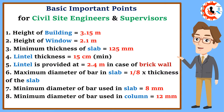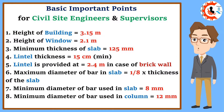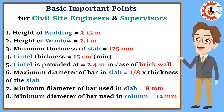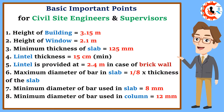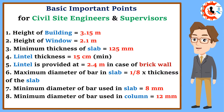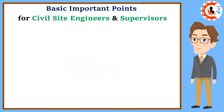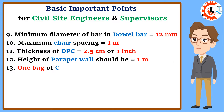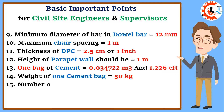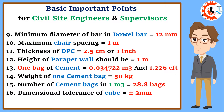6. Maximum diameter of bar in slab equals 1/8 times the thickness of the slab. 7. Minimum diameter of bar used in slab equals 8 millimeters. 8. Minimum diameter of bar used in column equals 12 millimeters. 9. Minimum diameter of dowel bar equals 12 millimeters. 10. Maximum chair spacing equals 1 meter.